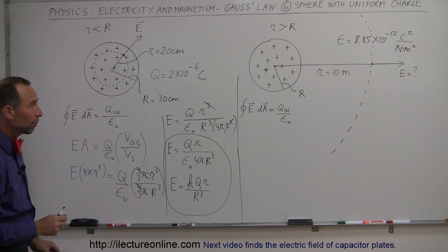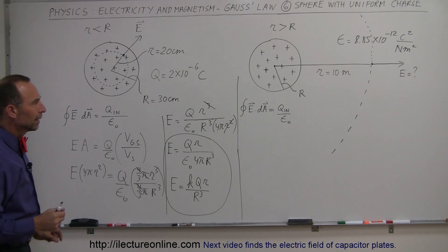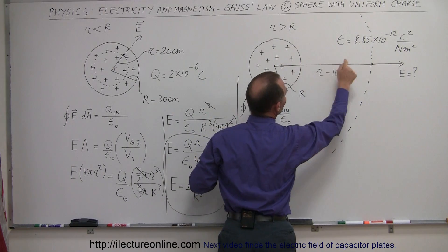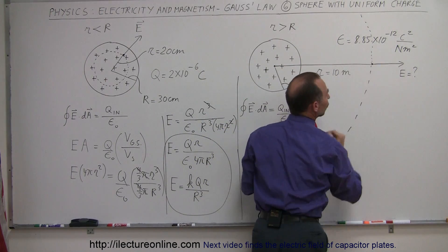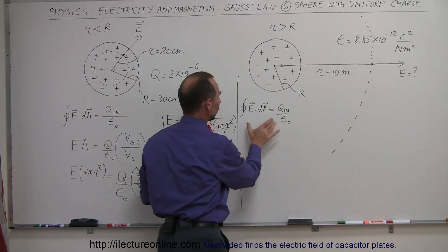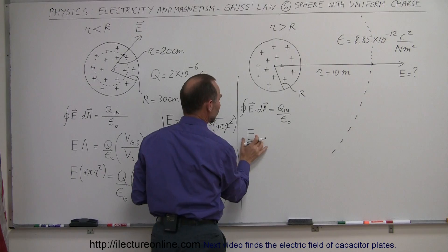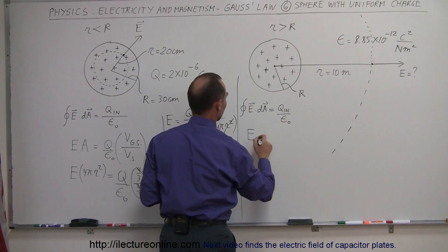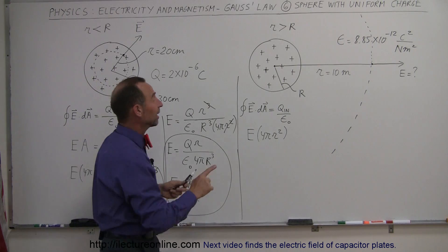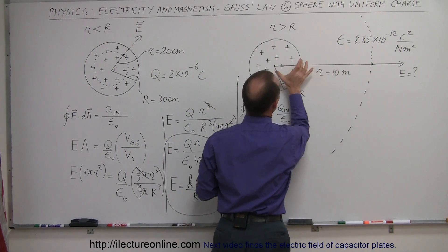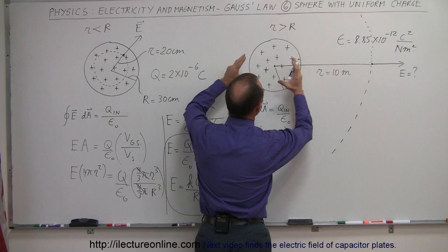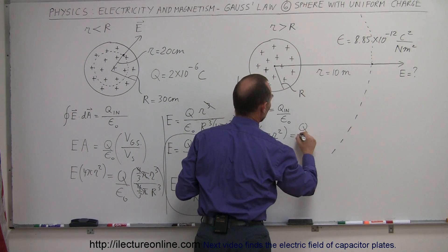Now for the second part: finding the electric field strength outside the sphere. We draw a large Gaussian surface with a radius of 10 meters. The electric field direction is again perpendicular away from the surface since it's symmetrical. Using Gauss's law: E times 4πr² equals the charge inside divided by epsilon sub-naught. In this case, little r is out at 10 meters, bigger than big R, and the charge inside is simply the total charge Q.